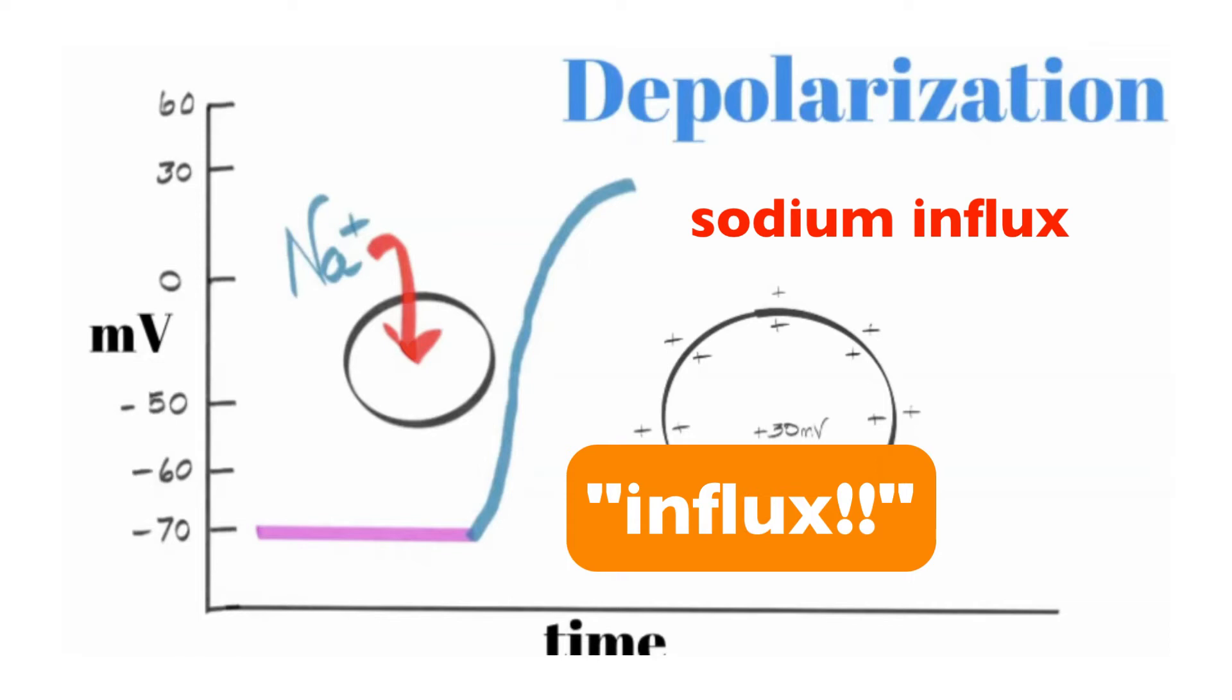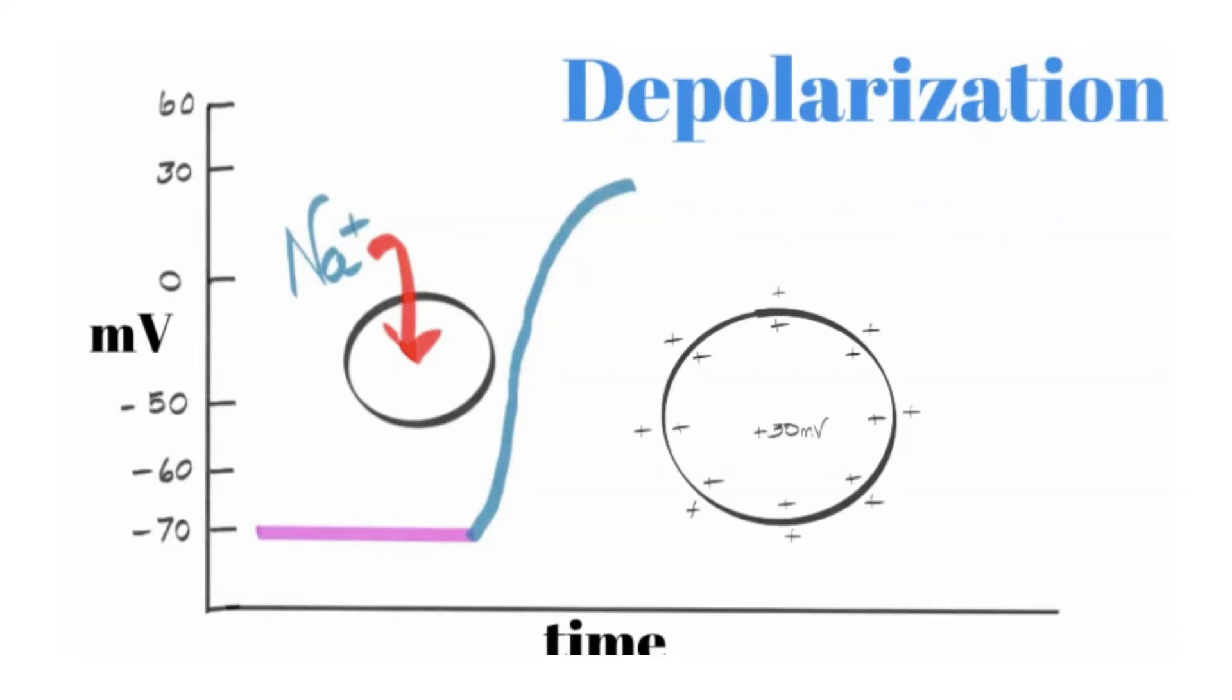To be clear, when cells depolarize, they don't all reach positive 30 millivolts. When we look at neurons of the central nervous system, when they depolarize, they're hovering just above zero millivolts. They're not getting too much into the positive range. In this case, what we're looking at is an overshoot. It's going well above zero millivolts all the way up to positive 30 millivolts. It's going to stop at positive 30 millivolts because the sodium gates have closed.